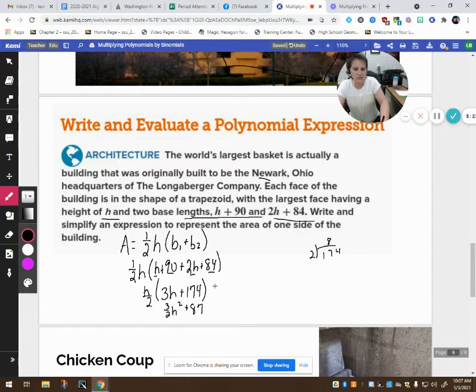174 divided by 2, 2 goes into 8, 16, 1, 4, yeah, 87. And then I can't forget my H. So this is the dimensions, or the area, I guess, with the dimension being H. So this is the area of the largest face of the building with using H as the height.